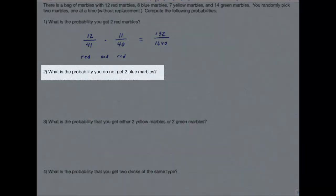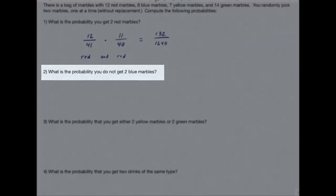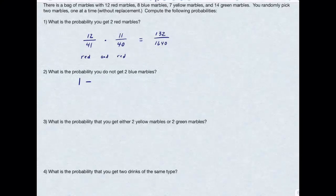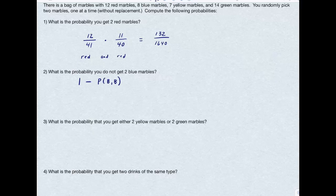However, the second one gets a little bit more complicated. There's two different ways of doing this. First of all, the probability I do not get blue marbles is simply equal to 1 minus the probability I do get two blue marbles. This is using the complement rule.